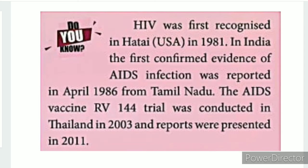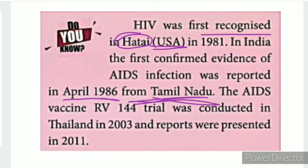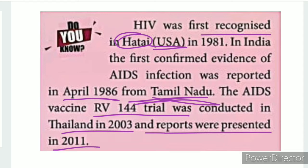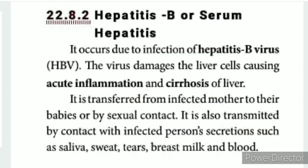HIV was first recognized in Haiti in 1981. In India, it was first identified in Tamil Nadu in 1986. An AIDS vaccine, RV144, was developed in Thailand in 2003, with a report in 2011. In 2011, AIDS remained a major disease.